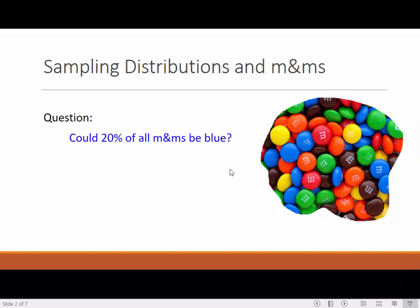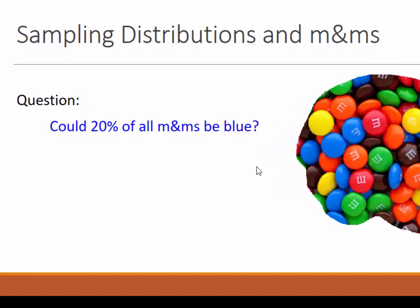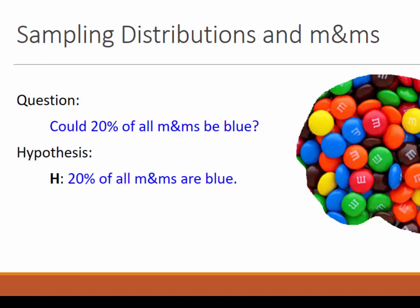The question we'd like to ask about it is: what percent of all M&Ms are blue? We will ask a modified version of this question: could the percentage of all M&Ms that are blue be 20%? We will translate this into what we might call a working hypothesis. We state a hypothesis as if it is true, even though we don't know whether it is or not. The hypothesis: 20% of all M&Ms are blue.